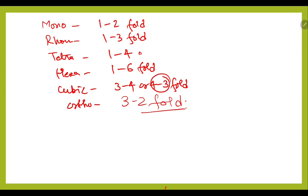All 14 kinds of Bravais Lattices are associated with only 7 crystal systems.